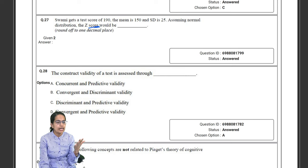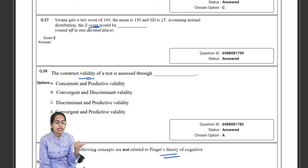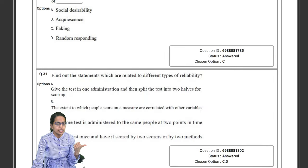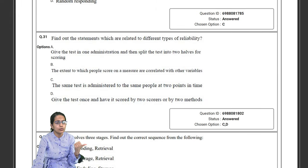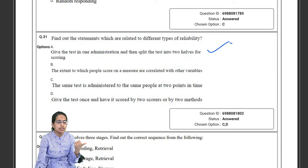Types of validity, types of reliability, highly important. So construct validity, how can you actually find out the construct validity? Which is not related to Piaget's stages of development? Again a very basic and fundamental question which was asked. There were questions related to types of reliability as we already mentioned.